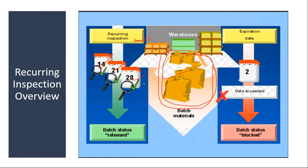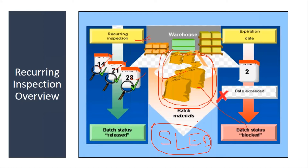On top of that, in pharma and some industries, they have a material shelf life. After that particular date, you cannot use that material anymore. For example, when you buy tablets or capsules from a medical shop, on the strip you will see batch number, manufacturing date, and expiry date. Once that expiry date — called SLED, shelf life expiry date — is reached, the system will move any leftover stock to blocked stock so that nobody can consume it.